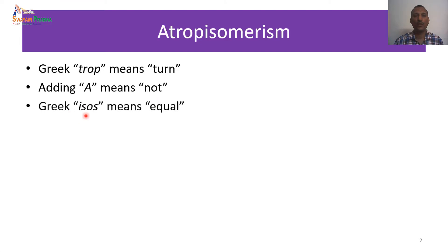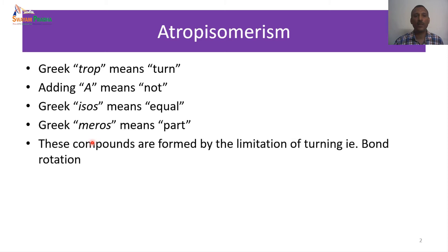The Greek word 'isos' means equal and 'meros' means part. Isomerism means compounds have the same molecular formula but different arrangements. Putting it all together, atropisomerism means these compounds are formed by the limitation of turning — that is, rotation. The bond rotation is restricted in this kind of isomer. Conformational isomers are generally formed by bond rotation, but in atropisomerism there is a restriction of that bond rotation. That is why atropisomerism is a special class of conformational isomerism.